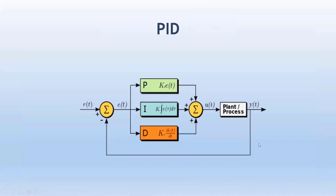This is a typical arrangement seen in a plant. There is a set point — what you want — denoted as r(d), and there is a process variable PV. The difference between PV and set point is the error — how much you are deviating from the set point. That error is passed through the PID algorithm, which consists of three terms: P, I, and D. We will talk about those in detail and how to tune a PID loop.